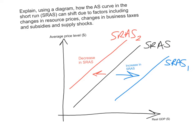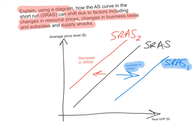The next learning objective is to explain using a diagram how the aggregate supply curve in the short run can shift due to factors including changes in resource prices, changes in business taxes and subsidies, and supply shocks. When the SRAS curve shifts to the right, there has been an increase in short run aggregate supply. When the curve shifts to the left, that means there has been a decrease in short run aggregate supply.